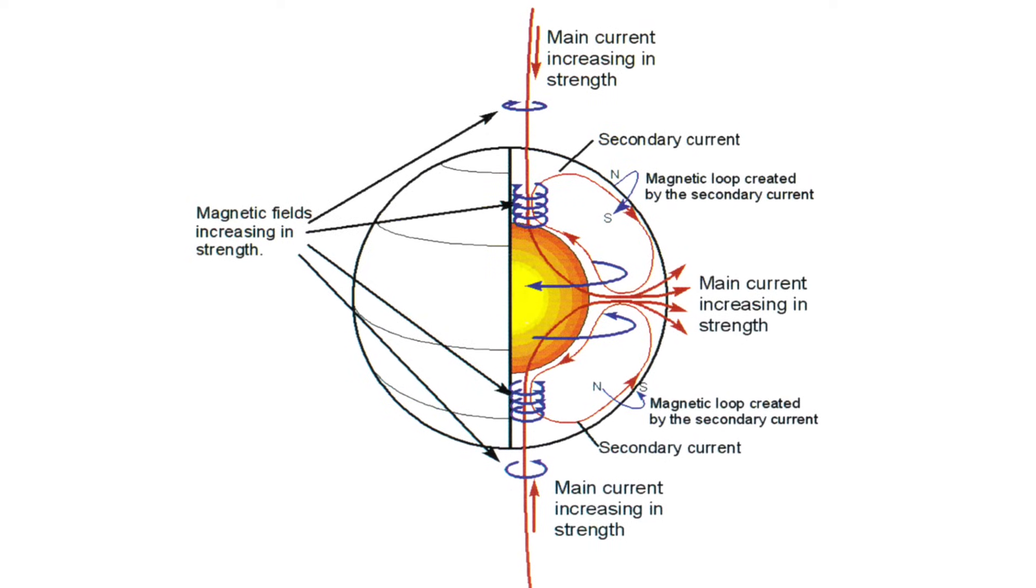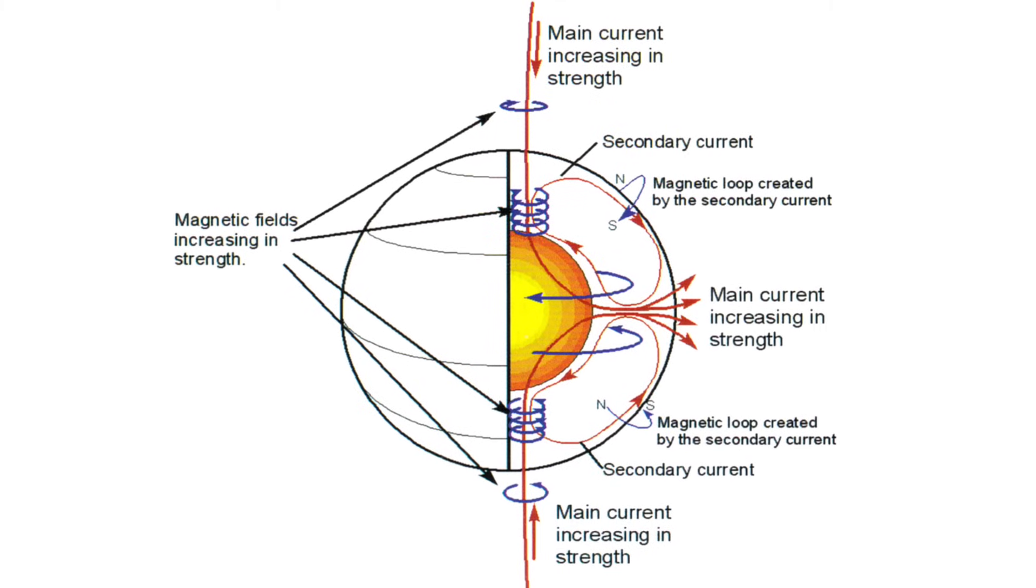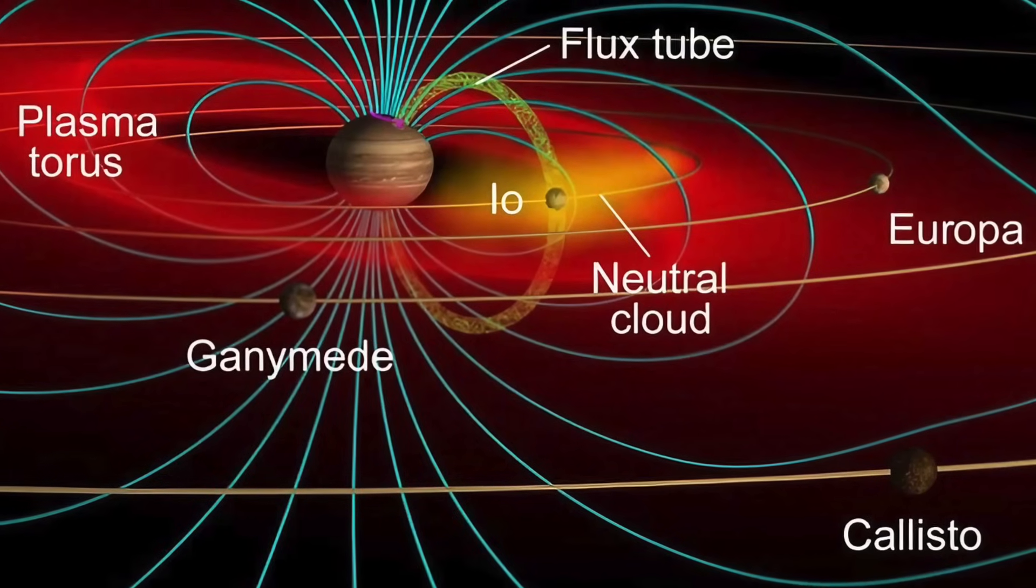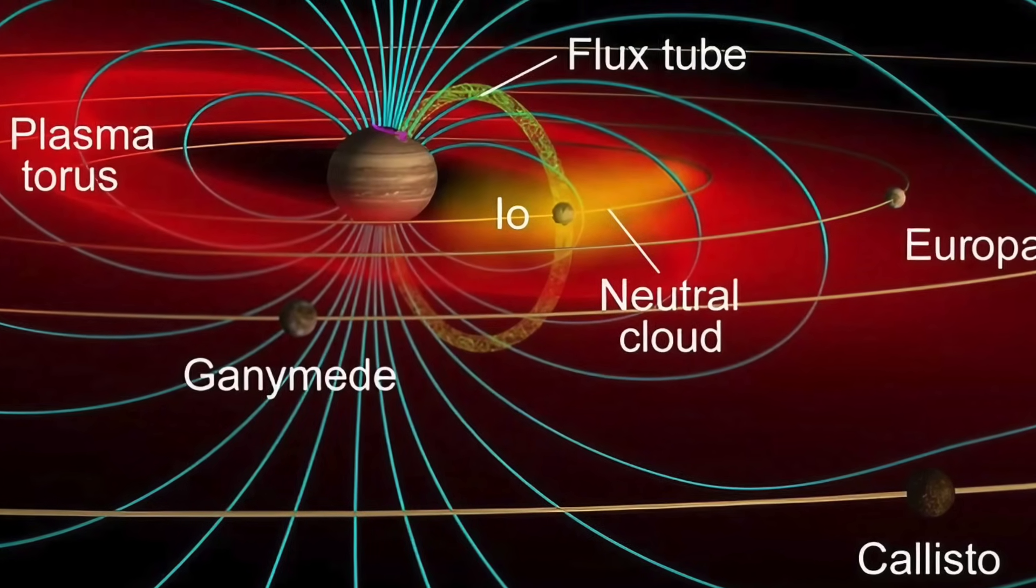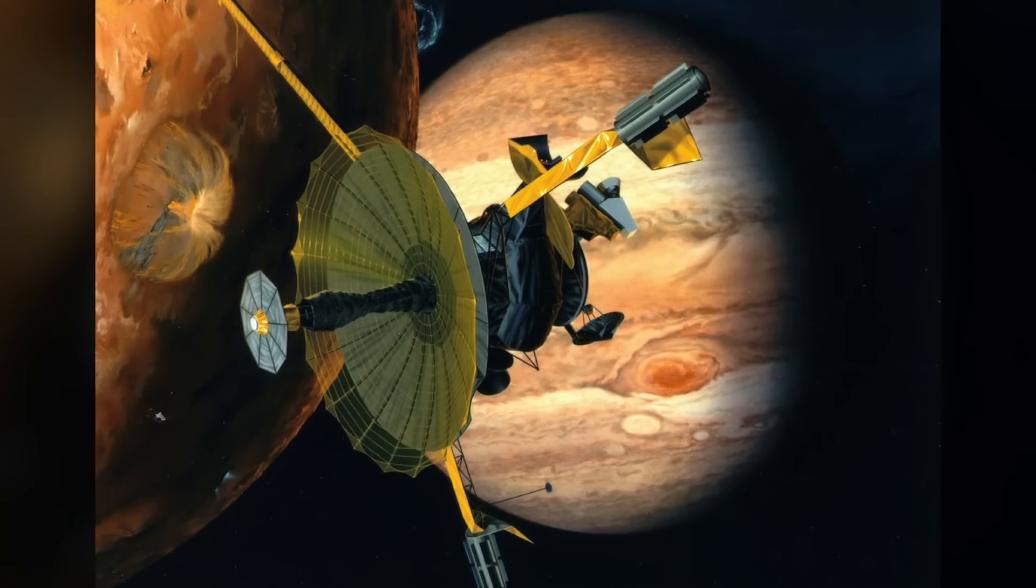And that power that those lines carry between the generator and your breaker box may be invisible, but it's there. Just like the flux tube that connects Jupiter's moon Io to the bright spot and its auroras. It was undetected until Pioneer 10 flew through it on December 3rd, 1973.